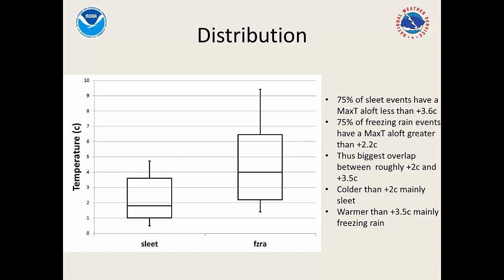Before getting into the probabilities, here's the general distribution. Looking at all sleet cases on the left and all freezing rain cases on the right: most sleet occurred below about plus 3.5°C, while most freezing rain occurred above plus 2°C. There was an overlap between plus 2 and plus 3.5 where both types occurred frequently. Above 3.5°C, sleet cases dropped off sharply, and below plus 2°C, freezing rain cases were relatively rare.